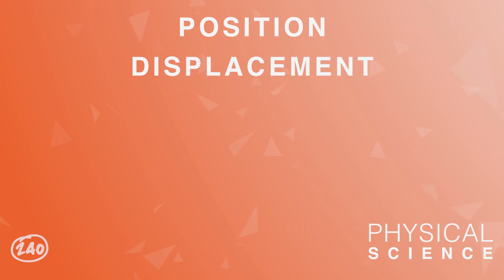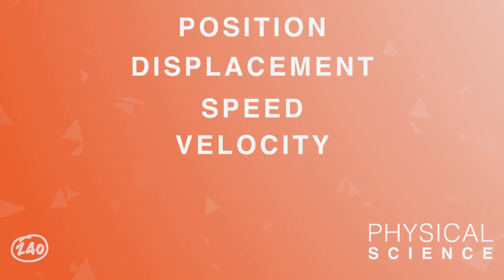Since physical science deals with physics, you need to know the basic fundamentals of objects in motion — like the different ways to describe an object's motion, such as position, displacement, speed, velocity, and acceleration. You're also going to need to know the different types of energy — not only potential and kinetic, but also nuclear, electrical, solar, and chemical. And you need to know the difference between heat and temperature, and how heat is transferred through conduction, convection, and radiation.